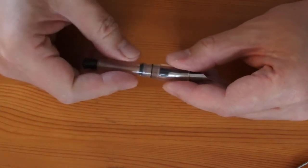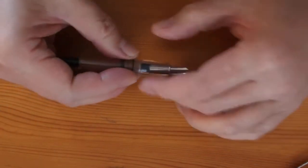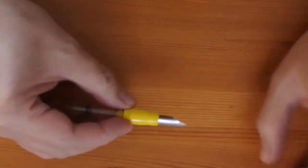To check airtightness, take off the nib and feed. I'll use this example.